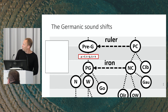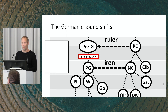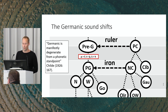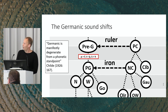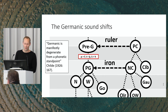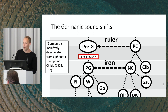Looking at the details, something very dramatic happened between the first and later Celtic loans: it's called the Germanic Sound Shift. You get p becoming f, t becoming þ, and k becoming h — the whole phonology of Germanic was transformed. It's a change from a standard Indo-European dialect to a very different language, and this is how you define the difference between pre-Germanic and Proto-Germanic. Childe commented on this, saying Germanic is 'manifestly degenerate from a phonetic standpoint.'